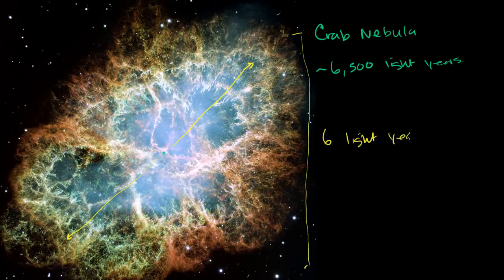And actually, we believe that our solar system started to form, started to condense, because of a shock wave created by a supernova relatively near to us.